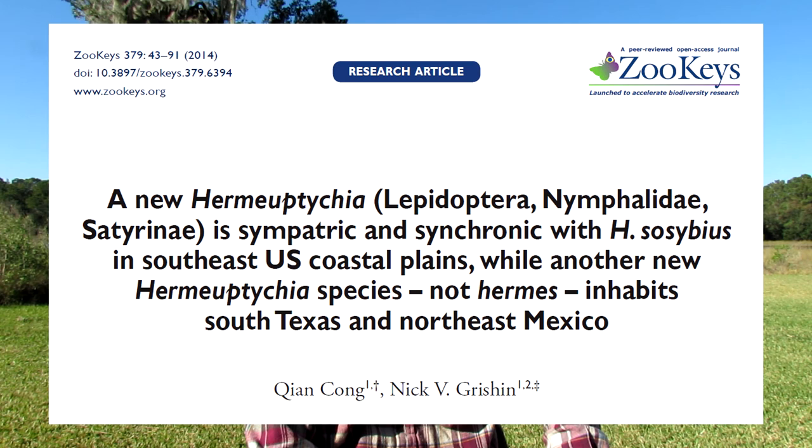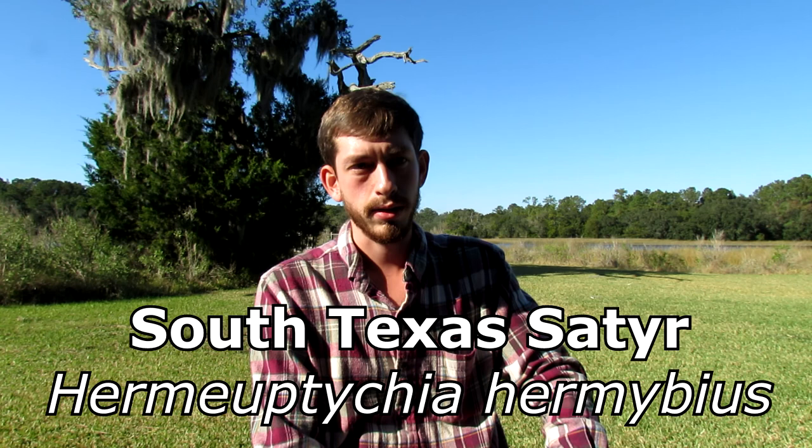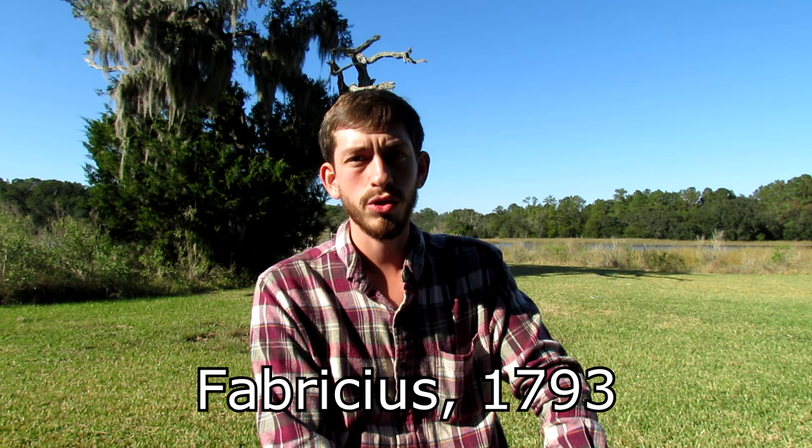For some quick background information on the species: the intricate satyr is a cryptic species of butterfly that was first described in 2014 by a team of researchers who were studying the genetics of the Hermeuptychia genus in North America. They accidentally discovered two new species of cryptic satyr that had previously been confused with the Carolina satyr — the South Texas satyr, found only in the Rio Grande Valley of Texas, and the intricate satyr, which is found throughout the southeastern coastal plain from Texas all the way up to North Carolina. The intricate satyr had been confused with the Carolina satyr for the last 221 years.